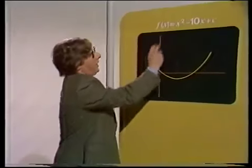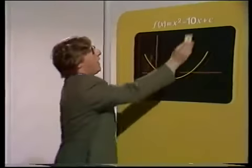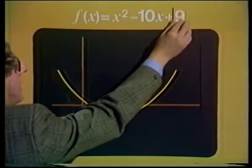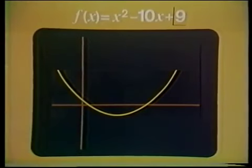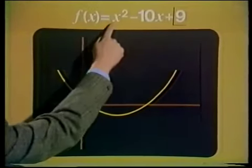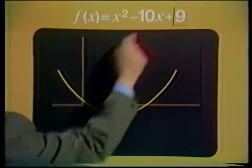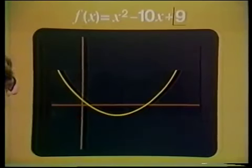Consider this quadratic function. We've actually plotted it for a value of c equal to 9. The question I want to ask is: what are the roots of the quadratic equation corresponding to that? That is, for what values of x is this function equal to 0? From the picture, that's very easy to see — it's just these two values.